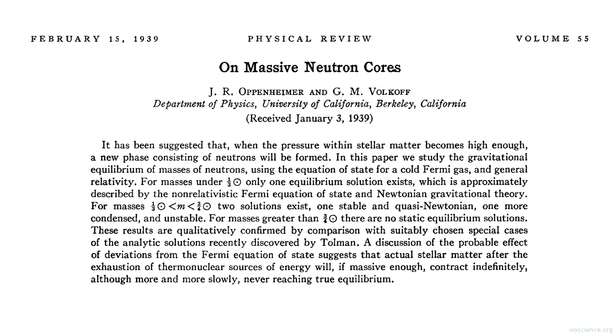This led to a consideration of the stability of neutron stars through neutron degeneracy pressure. In 1939 Oppenheimer and Volkoff analyzed the problem and showed that there is an upper limit to the mass of a neutron star, beyond which it will undergo gravitational collapse. They concluded: actual stellar matter after the exhaustion of thermonuclear sources of energy will, if massive enough, contract indefinitely.